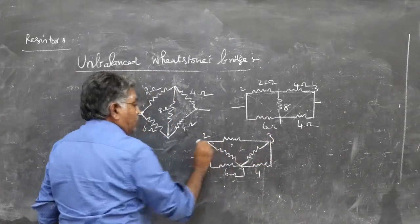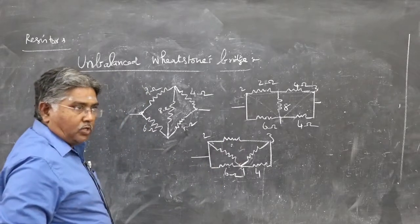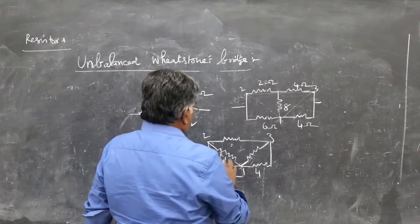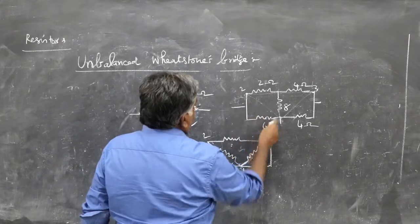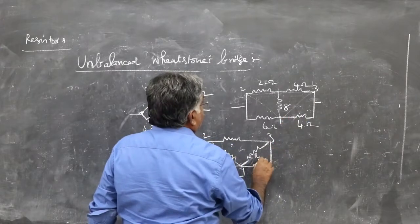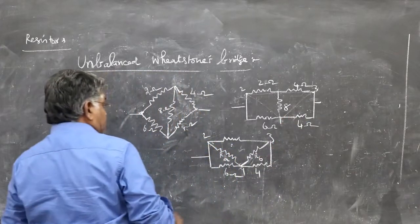These are all nodal points: 1, 2, 3. Of course, we know how to convert it. Let us see how to get this one. You can call this one RA, this one RB, this one RC.